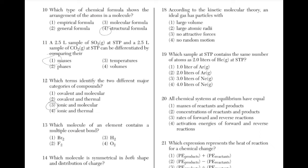Oxygen has 6 electrons in its outer shell. When two elements of oxygen have a single pair between them, each element will have another 5 electrons around them, which will give them each 7, not 8.